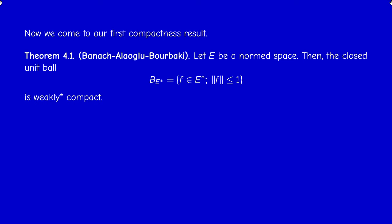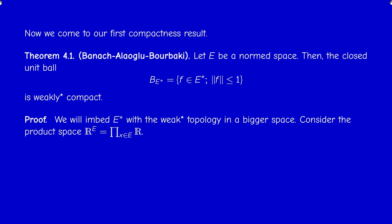The strategy to prove this is to embed E* in a bigger space — the space of all functions from E into R, whether continuous or not, linear or not. Recall that E*, by definition, is the set of all linear maps from E into R that are continuous in the norm topology or in the weak topology — it doesn't matter.